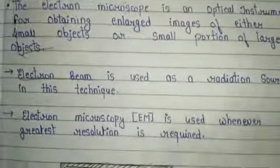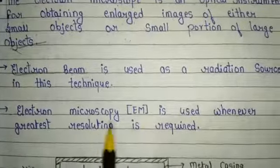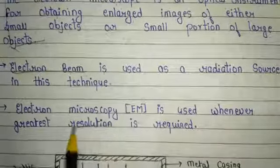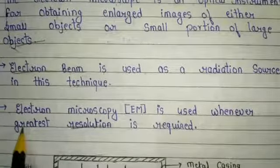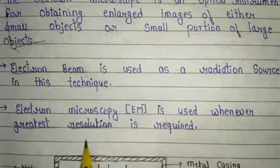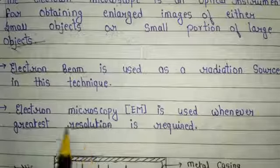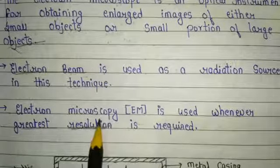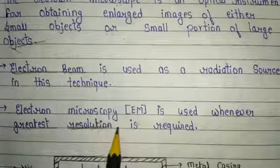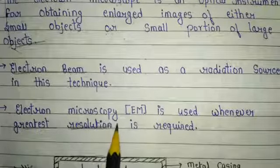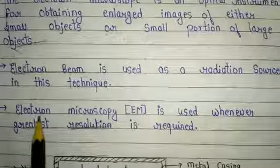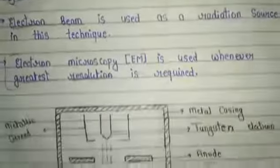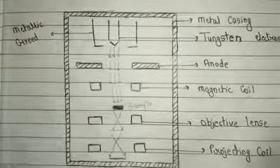Electron microscopy is used whenever the greatest resolution is required. When we require high resolution or high magnification power for a sample, we use electron microscopy. We do not use light microscopy in such cases because light microscopy has lower magnification power than electron microscopy.